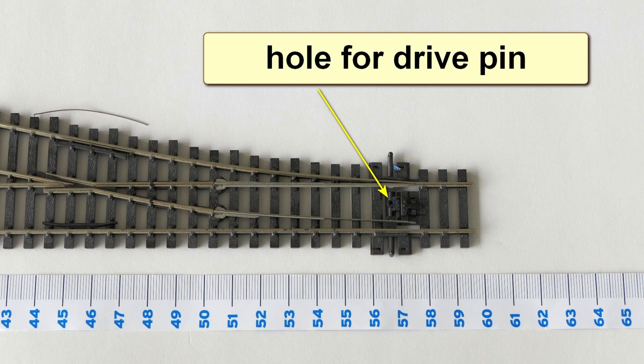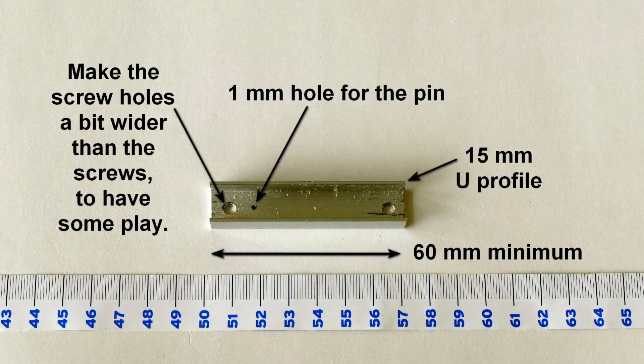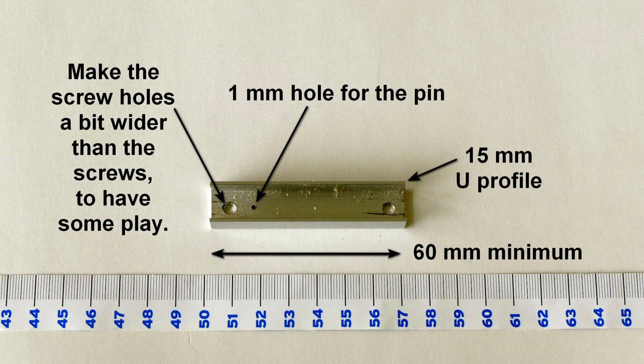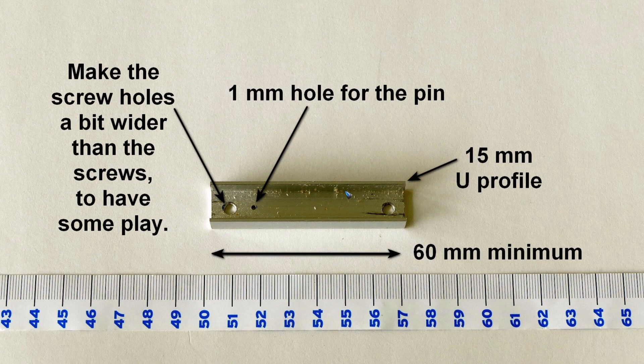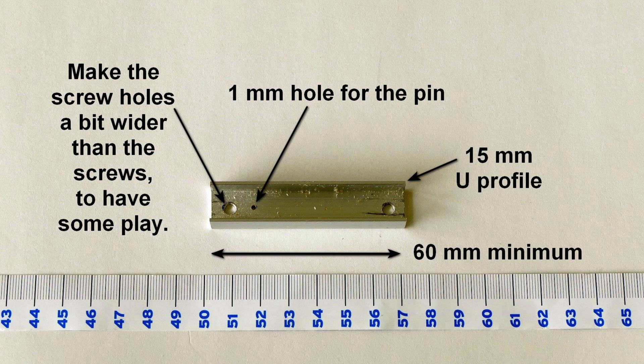What we need is a small piece of at least 60 millimeters, 15 millimeter U-profile. When you buy it at the do-it-yourself shop, it's nice to take a servo with you because there are sometimes tolerances in these strips and the servo must of course fit inside. If it doesn't, then you need to go to another shop and try to find another strip.